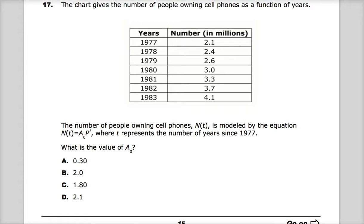The chart gives the number of people owning cell phones as a function of years. So this is how many millions of people own cell phones since 1977. This number's gone up just a little bit since then, and by a little bit I mean ridiculous amounts.